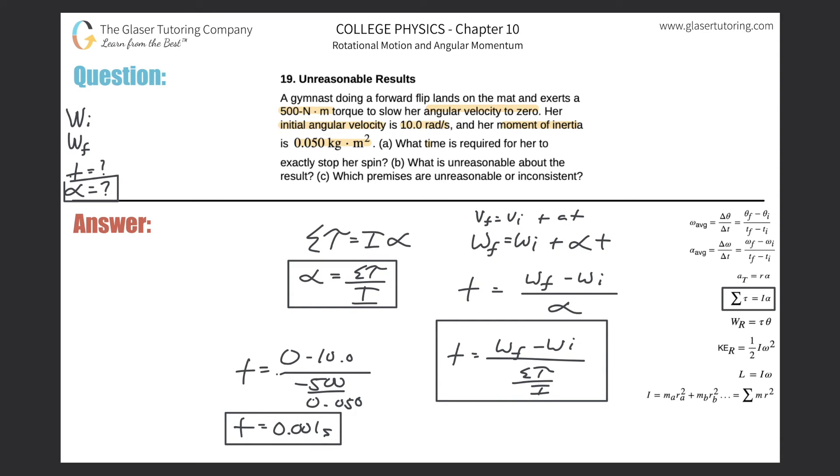If you were to actually calculate the angular velocity here, it's really, really high. So no, that's what's unreasonable.